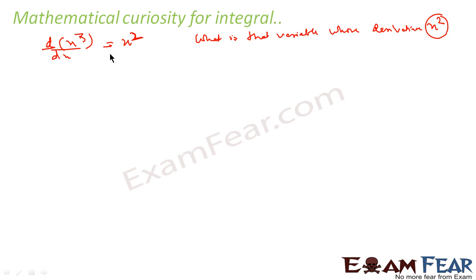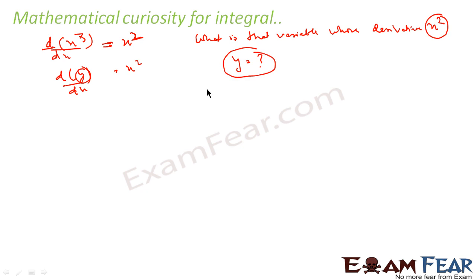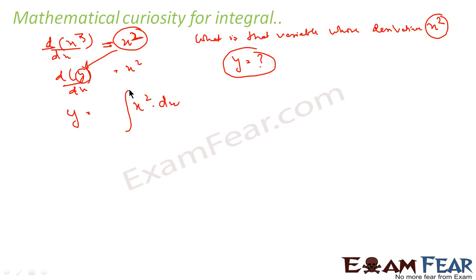We know that if you differentiate x³ you get 3x². So we can ask: what is that variable such that if you differentiate it, you get some value? Let's suppose that variable is y, so dy/dx = x². What is y? How do you find it? If you are given x² and you want to find the value of y, this is done using integration. So in this case y is nothing but the integral of x² dx, written using the integral symbol.